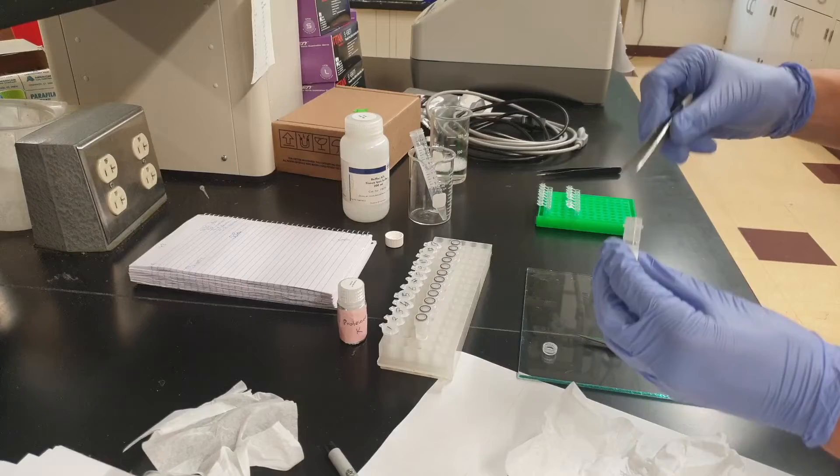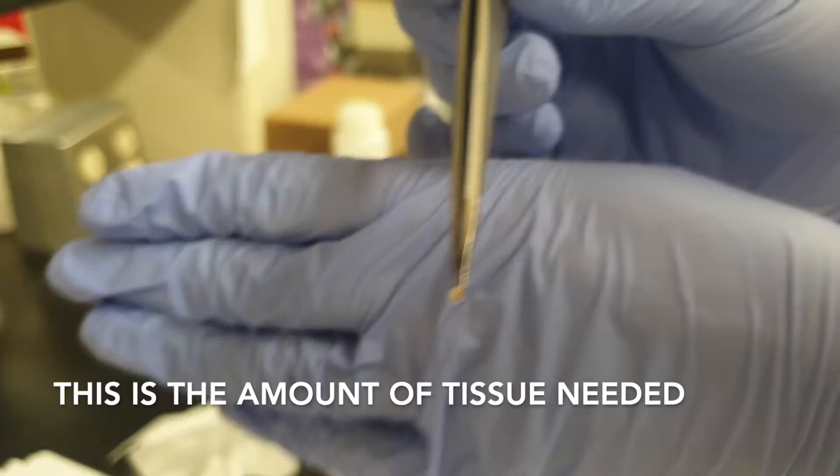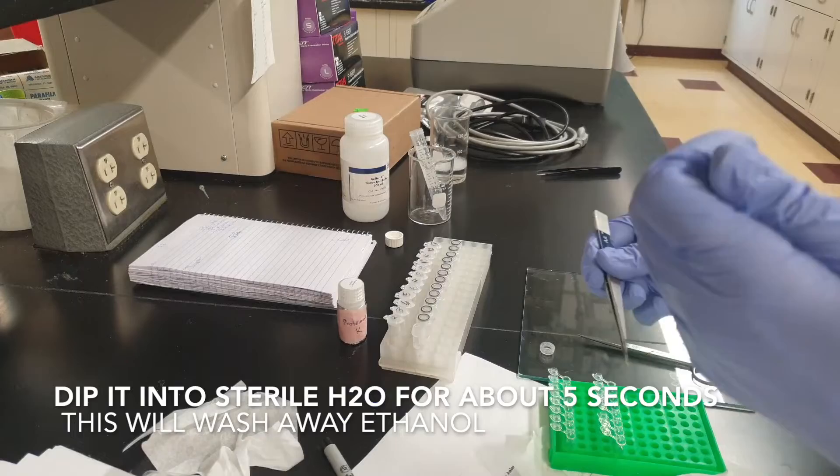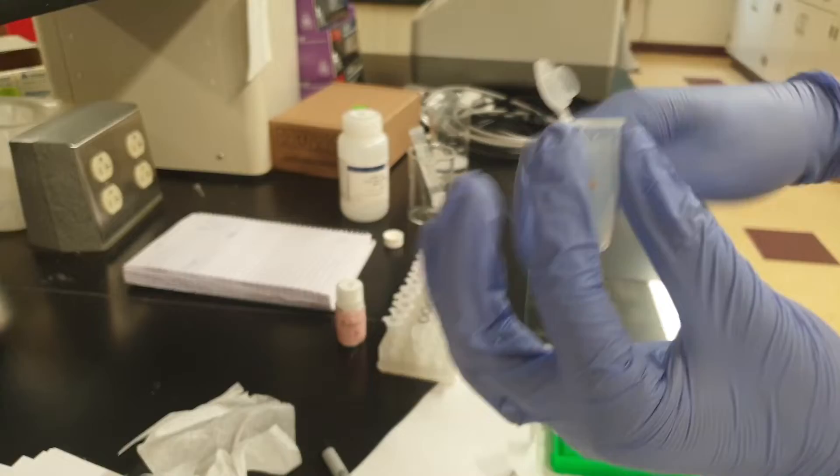Start by dipping your tweezers into ethanol to sterilize them, then grab your tissues. The amount of tissue we're going to use is about the size of half a grain of rice. Then dip it into sterile water for about five seconds; this will wash away ethanol. Then you can put them into the sterile tubes that are already labeled.